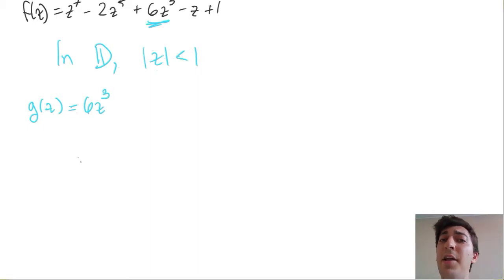Okay, another advantage about this function is that the 6z³, we know where all its zeros are. So namely, we know that we have three zeros, or a zero at the origin, with multiplicity 3. Let's investigate this as part of Rouche's theorem.